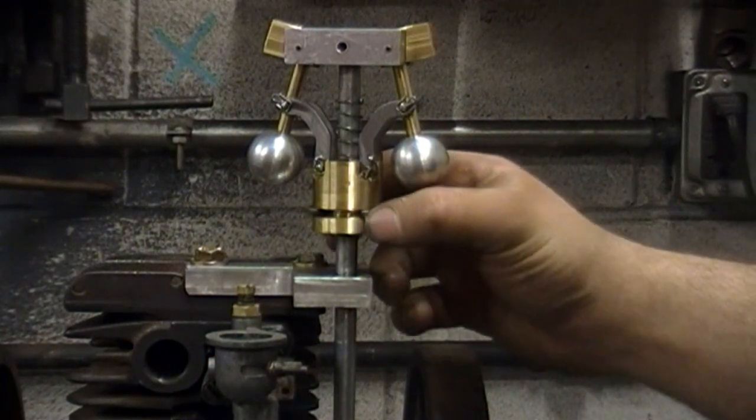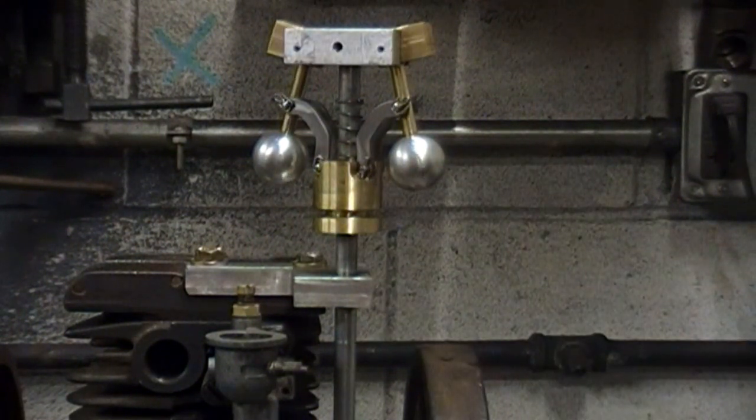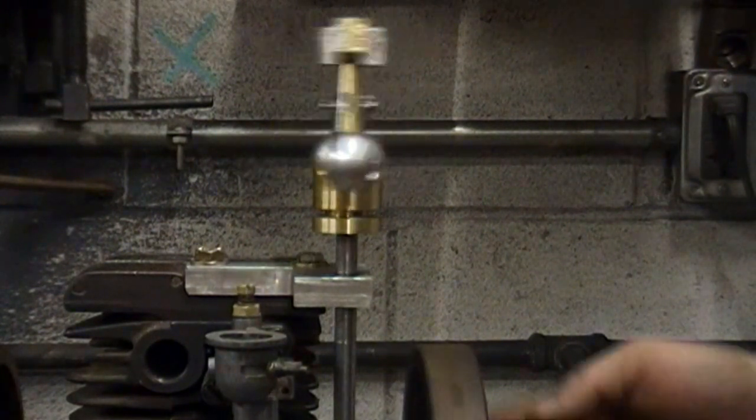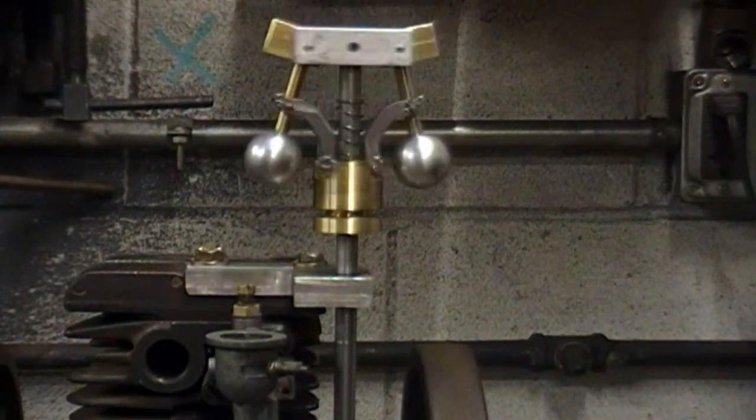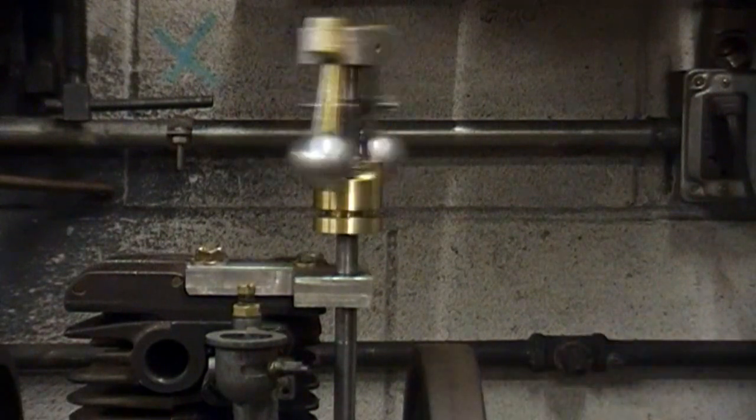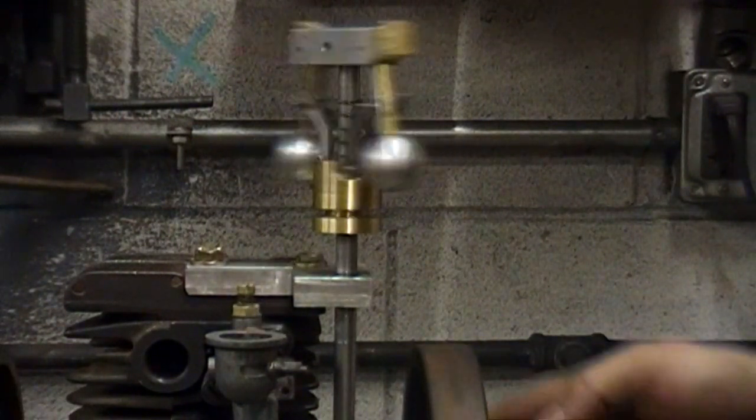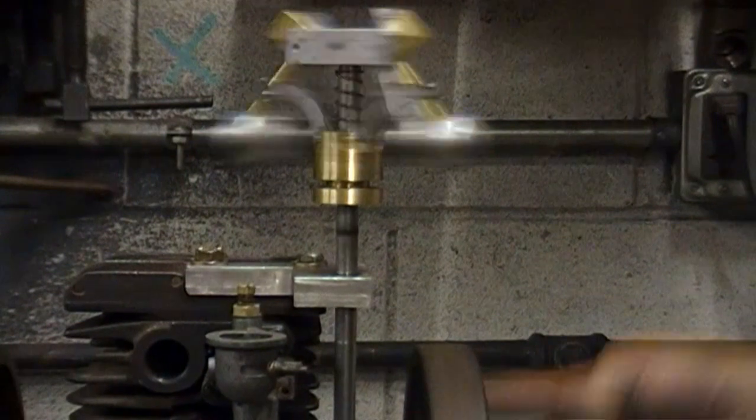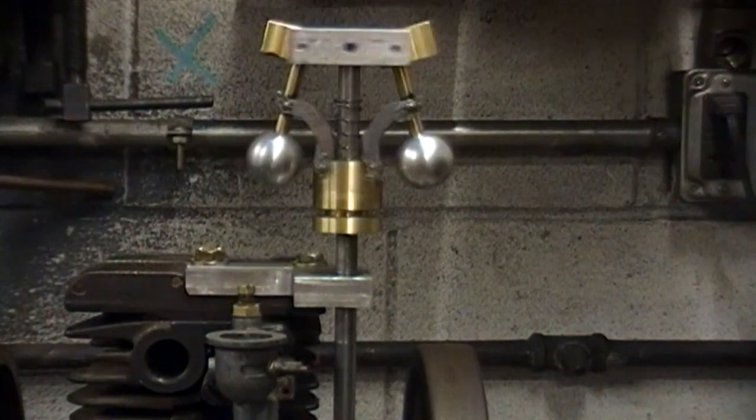But I'll show you how the governor operates real quick, just turning the engine by hand. You can see at a slow speed there's not enough centrifugal force to pull the spindle up. But if I speed it up a little bit, you can see it start to raise there and eventually pull all the way up.